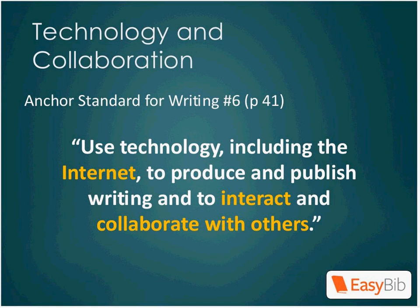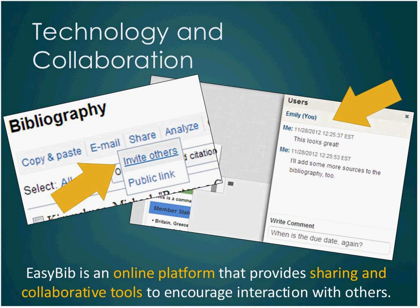Writing standard number six states that students should use technology, including the internet, to produce and publish writing and to interact and collaborate with others. EasyBib is an easy-to-use online platform that, through various project-sharing features, enables students to easily collaborate on projects while strengthening their ability to use technology. Students are able to share their notebooks with classmates, teachers, or librarians, and bibliographies can be worked on by multiple students at the same time, which really allows a collaborative environment, especially for group projects.